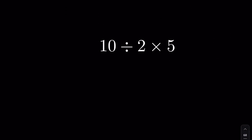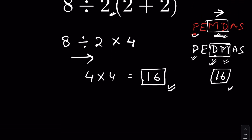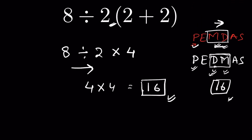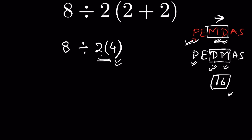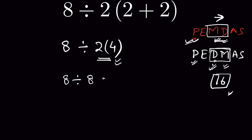Let's see where people make the mistake. When solving this question, many write 2 plus 2 as 4 and put a parenthesis around the result: 2 times (4). They then believe parenthesis must be solved first, so they do that multiplication first — treating 2 times 4 as 8 — and then compute 8 divided by 8, getting 1 as their answer.